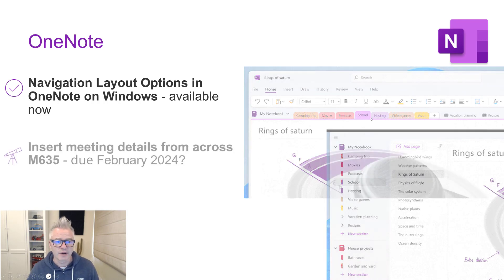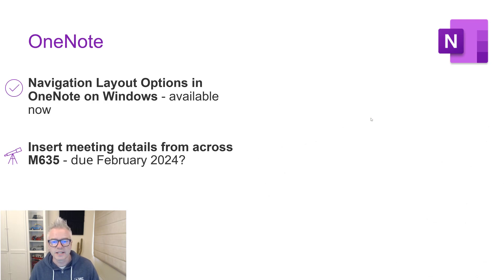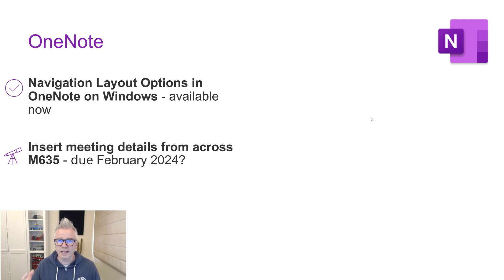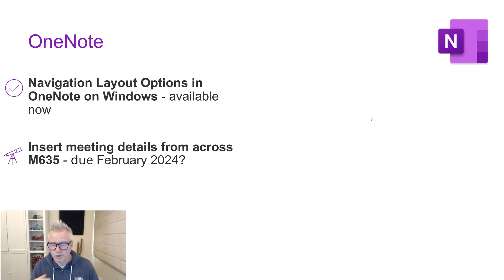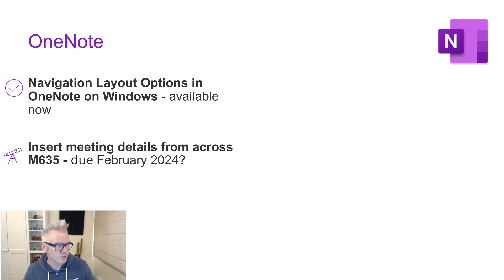Insert meeting details from across 365. You can already pull in details of a meeting into OneNote — create a new page, pull in the meeting details with time, date, and name already populated. What it's also going to start doing is pulling in the other assets from the meeting — Loop components and other details from Outlook and Teams directly into your OneNote. That looks quite good, though it's not due until February next year, so definitely one to look out for.